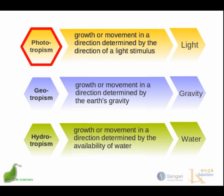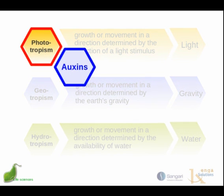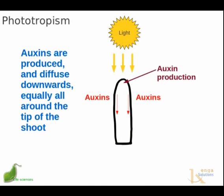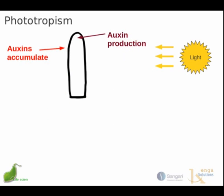Let's look at phototropism first and the role played by auxins in phototropism. When light is shining directly down on a shoot from above, auxins are produced and they diffuse downward equally all around the tip of the shoot. So the plant simply grows up. But what happens if the light is directional from the side? For example, a plant might be growing out of the side of something and then need to grow up towards the light. Phototropism is best demonstrated when the light shines from the side, such as when a plant is in a window.